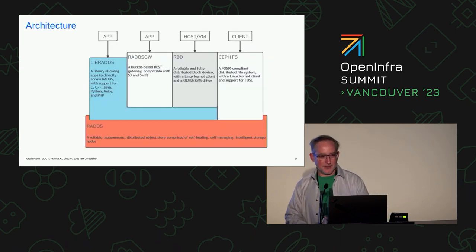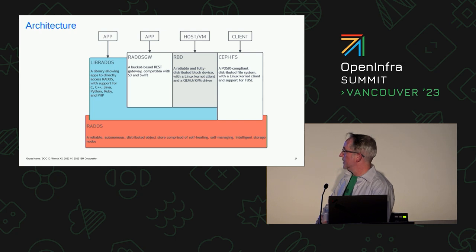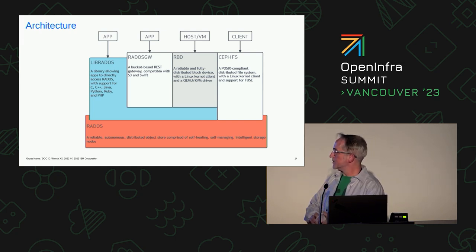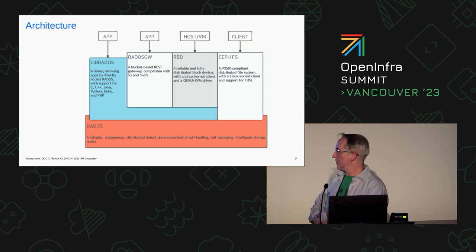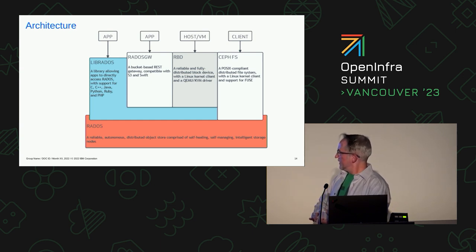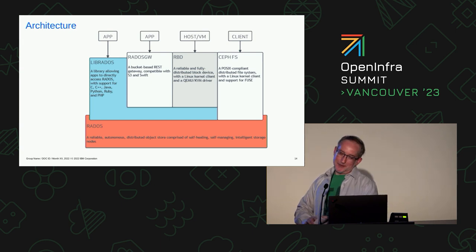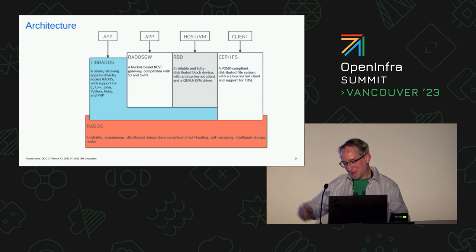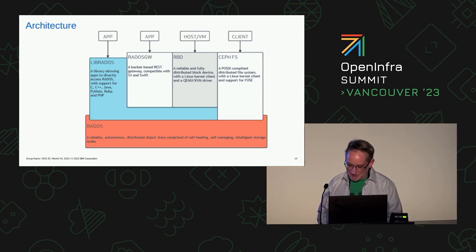Here's our architecture diagram. The Rados Gateway is our object storage service. RBD is the Rados Block Driver, our block storage. And CephFS is our file system. These are all sitting on top of Rados. Those are the three services exposed to the user — that's what Ceph does. Now we want to talk about the backend of Ceph.